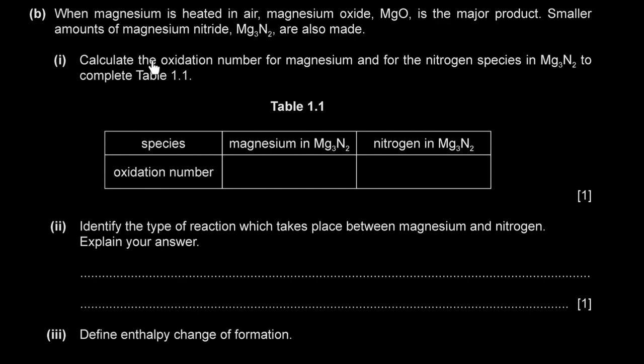Calculate the oxidation number for magnesium and for the nitrogen species in magnesium nitride. Magnesium is a group 2 metal, so it's a 2+ ion — magnesium has an oxidation number of +2. Nitrogen is in group 15 and gains 3 electrons to complete its octet. That's the nitride ion, N³⁻.